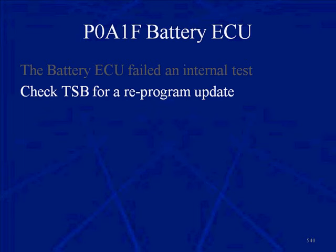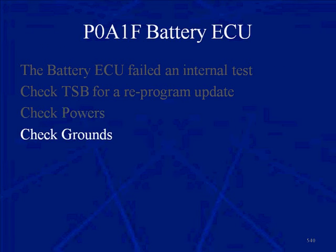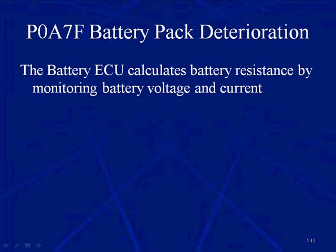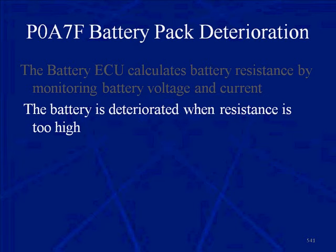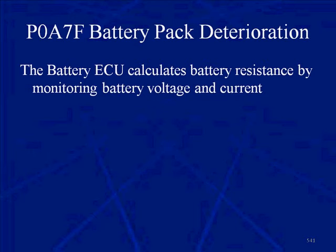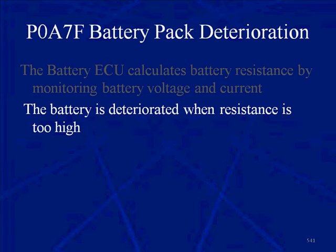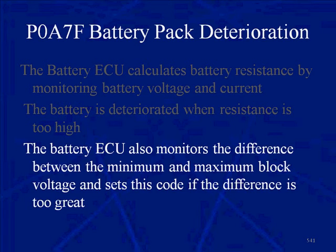P0A1F means the battery ECU failed an internal test. Check TSBs for a reprogram update, check powers, check grounds, then you may have to replace the unit. A P0A7F tells us the battery pack has deteriorated — battery resistance is too high. The battery ECU calculates resistance by monitoring battery voltage and current to determine when it has deteriorated. It also monitors the difference between min and max block voltage and sets this code if the difference exceeds 3 tenths of a volt.